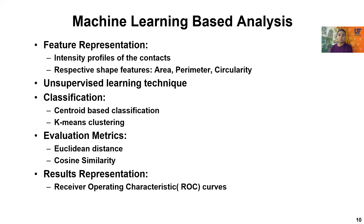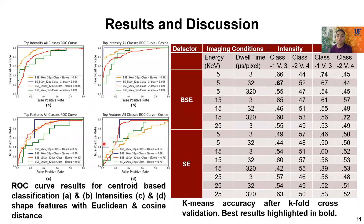We also performed machine learning based analysis. As feature representation, we considered the intensity profile and shape features. The technique was unsupervised learning, as the attacker will not have labeled data on the contacts to train a model in a supervised way. The evaluation metrics were Euclidean distance and cosine similarity. From the clustering and classification accuracy results, we can see that classification of real contacts versus dummy contacts was unsuccessful, proving our proposed approach of camouflaging as a reverse engineering barrier.